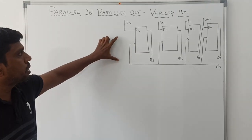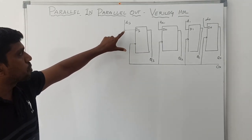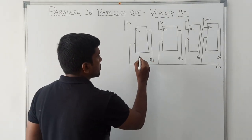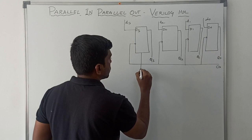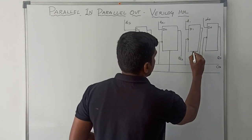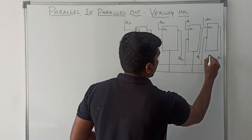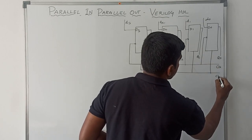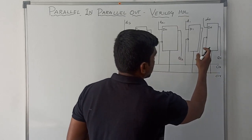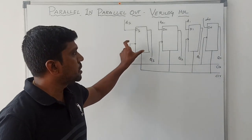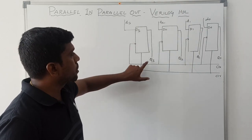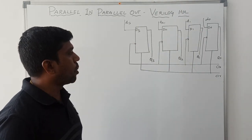In this block diagram, we have 4 signals: input data, clock, output, and one more signal which is clear. Clock is a triggering signal for the flip-flop. Clear is used to reset all the values. D is the data input, and Q is the output.